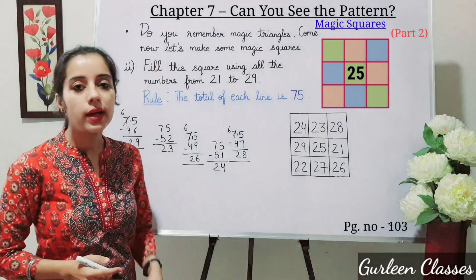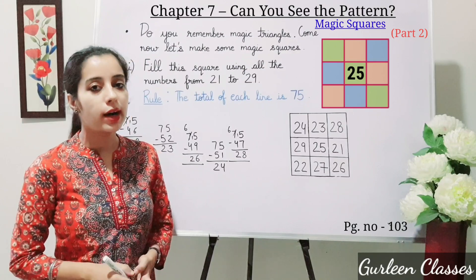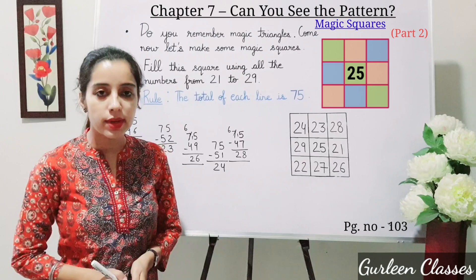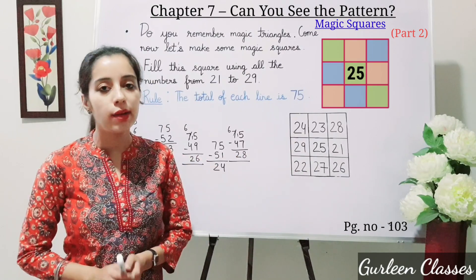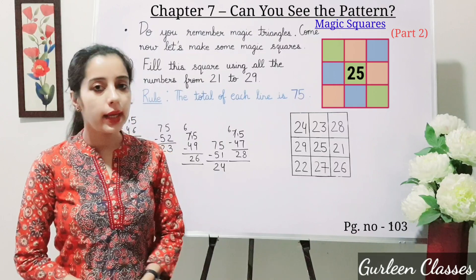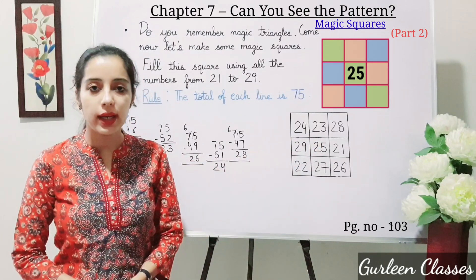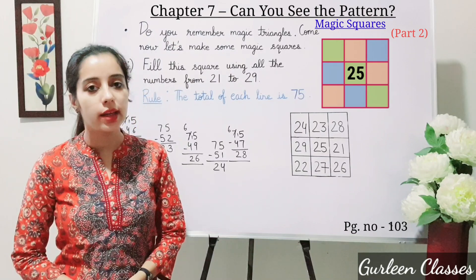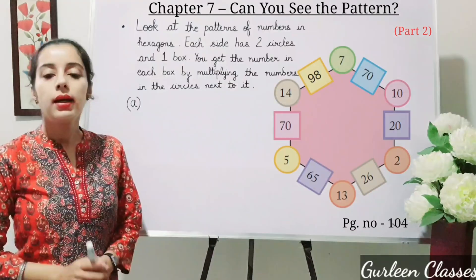Now let us check our answer. The magic square total is 75. 24 plus 23 is 47, plus 28 is 75. Checking diagonally: 28 plus 25 is 53, plus 22 is 75. Students, write this answer in your book.